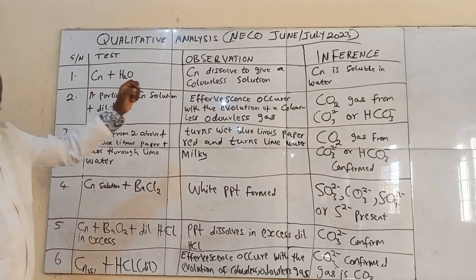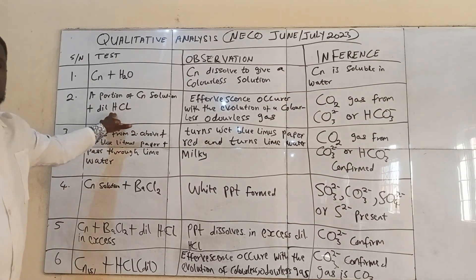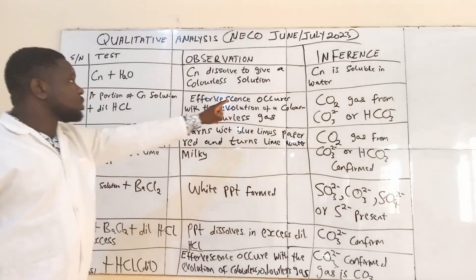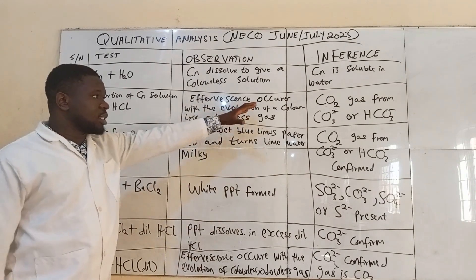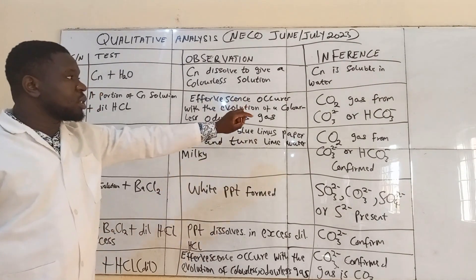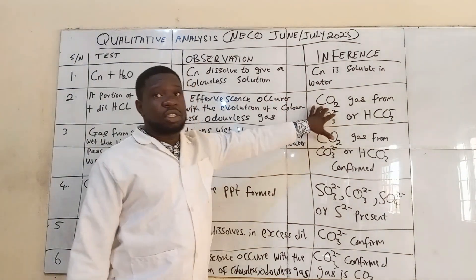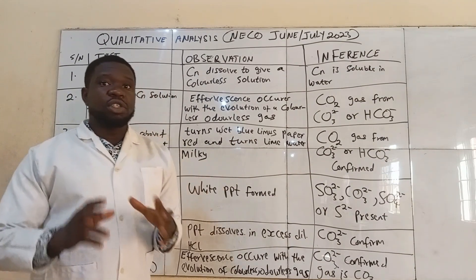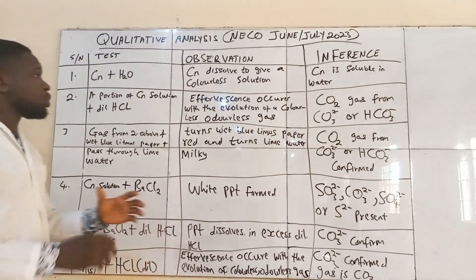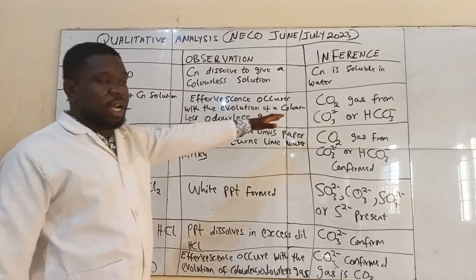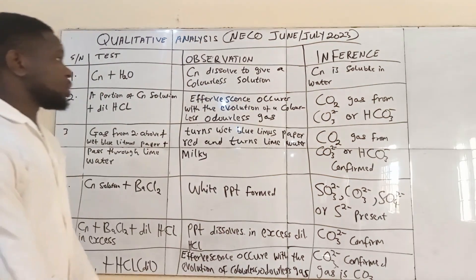The second experiment you have to perform: you bring a portion of the solution which you have made from the salt and then you add dilute hydrochloric acid and observe what happens. You will notice that effervescence will occur with the evolution of a colorless, odourless gas. If that happens, then you can suspect CO₂ gas, because CO₂ gas is colorless and odourless. CO₂ gas is found in two ions: the CO₃²⁻ ion or the HCO₃⁻ ion. So your inference will be that this is CO₂ gas from the CO₃²⁻ or HCO₃⁻ ion.